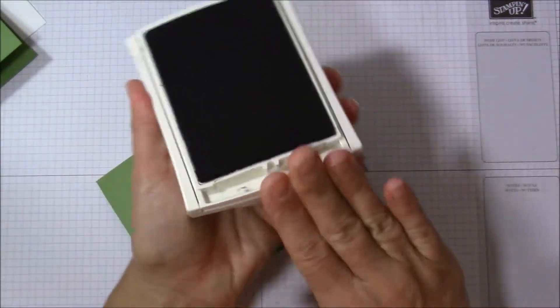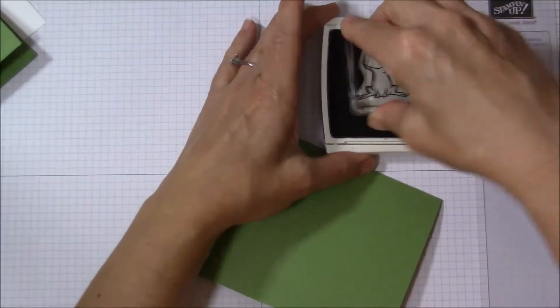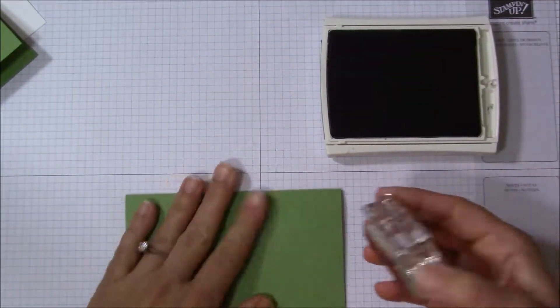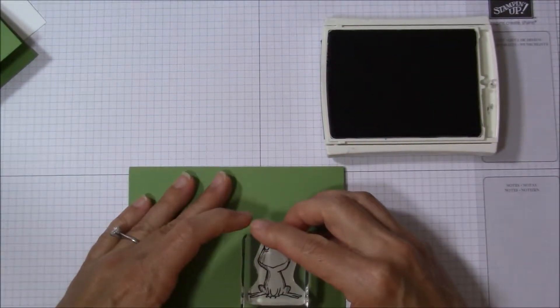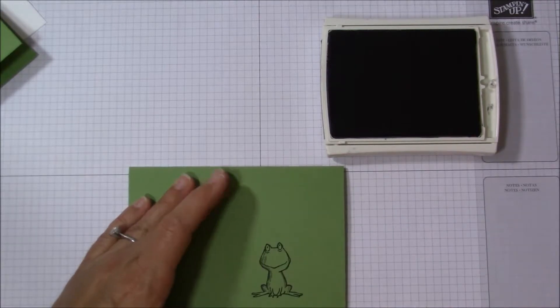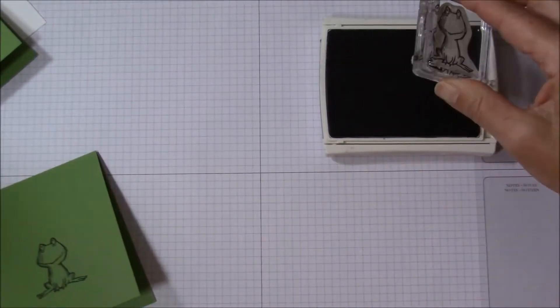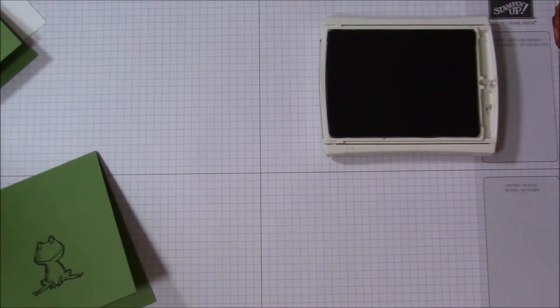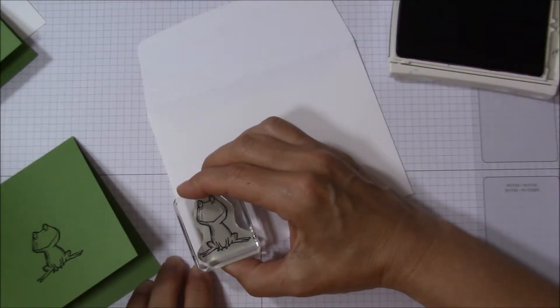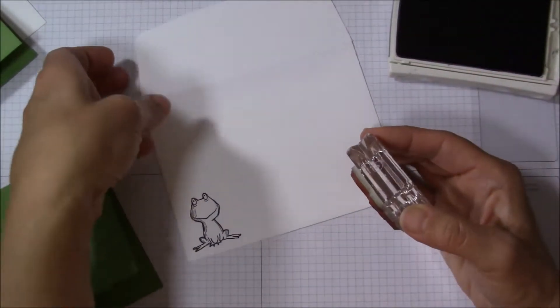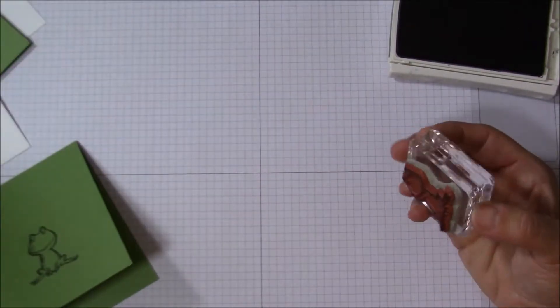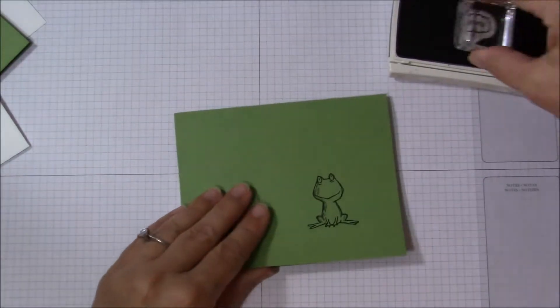Open the black ink pad, ink up the frog, and just stamp him on the front of the wild wasabi. Now I'm going to also stamp him on the envelope since I have the ink open.